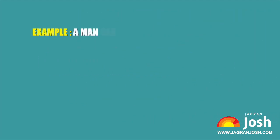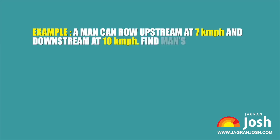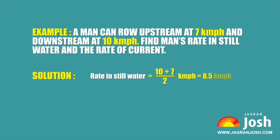Example: A man can row upstream at 7 km per hour and downstream at 10 km per hour. Find the man's rate in still water and the rate of current. Solution: Rate in still water = (10 + 7) / 2 = 8.5 km per hour. Rate of current = (10 − 7) / 2 = 1.5 km per hour.